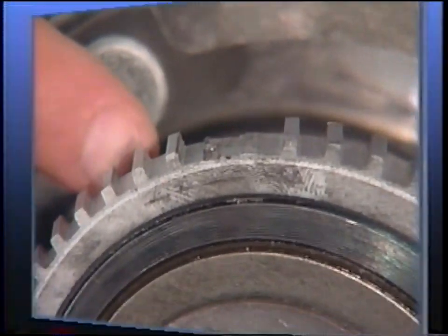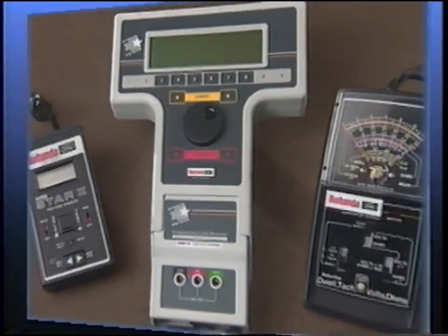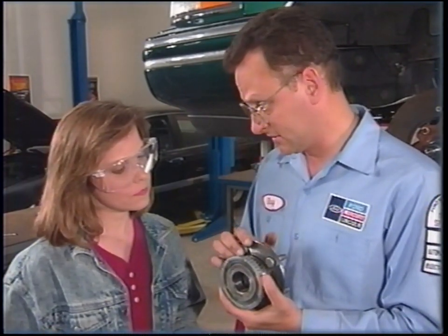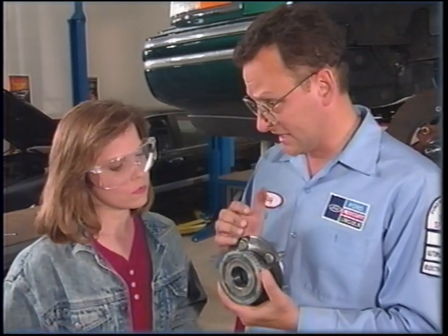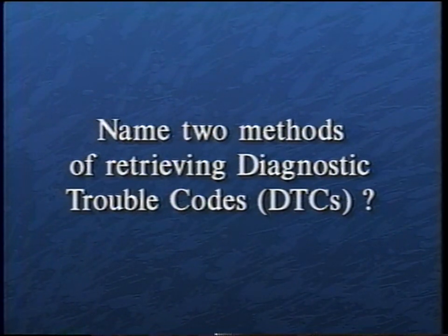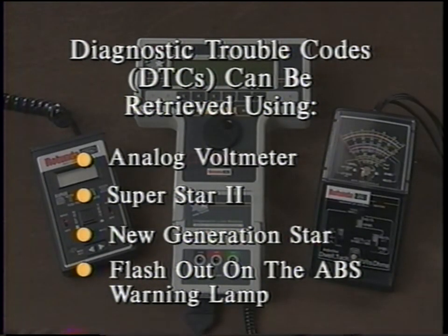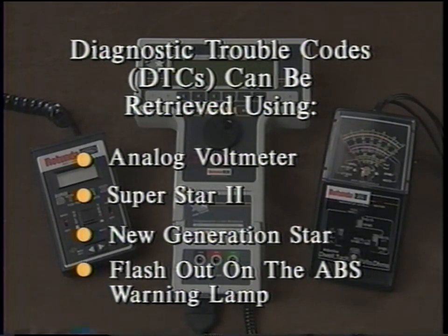This completes part three of this training video. Answer the following review questions, then read lesson three in the ABS training reference book. The first question is: name two methods of retrieving diagnostic trouble codes. Diagnostic trouble codes can be retrieved using an analog voltmeter, Superstar 2, New Generation Star Tester, and Flash Out on ABS Warning Lamp. If you had any two of these methods, you are right.